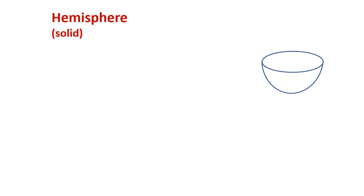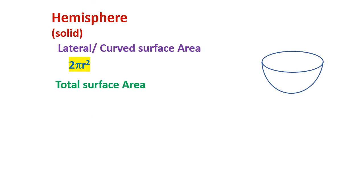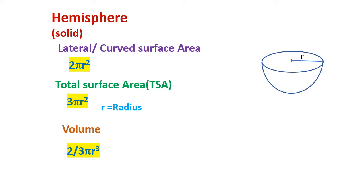Hemisphere: curved surface area 2 pi r square, total surface area 3 pi r square, where r is radius, volume 2 by 3 pi r cube.